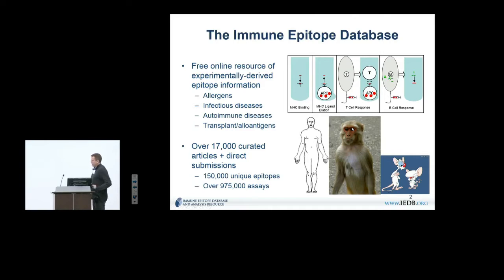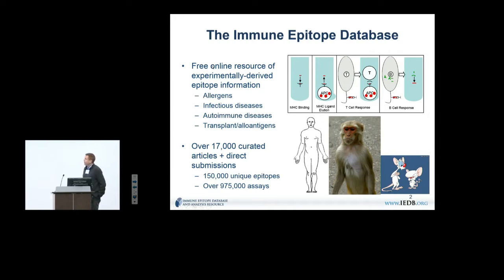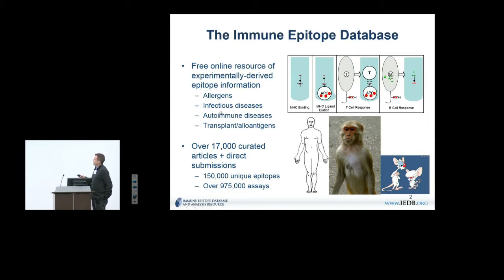The immune epitope database is a free resource — we always have to point that out, especially at conference booths. Obviously it's free because it's NIH-funded. The goal is to give experimentally derived information and make it freely available to the community. In terms of scope, we deal with allergens, infectious diseases, autoimmune diseases, transplants, and alloantigens. We do not specifically curate cancer epitopes.